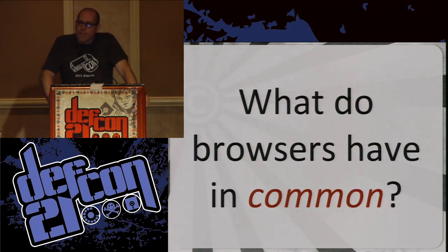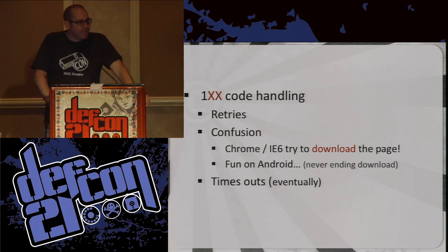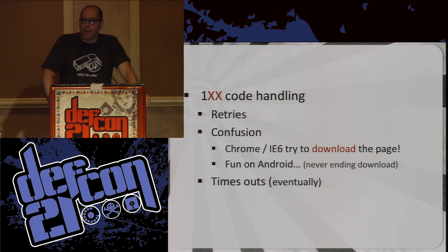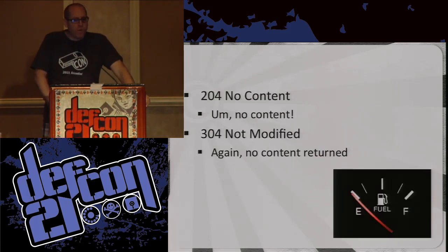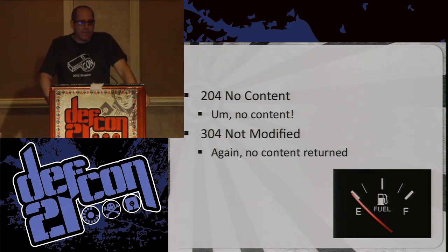So what do all browsers have in common? The 100 codes cause retries, confusion — fun on Android, never-ending downloads. It times out eventually because the browser thinks there's more data coming and just sits there waiting. With the 200 codes, you get no content or not modified — you just get headers saying there's nothing here. So as you would expect, all the browsers just ignore any content you're responding with because they don't expect there to actually be any content within those responses.